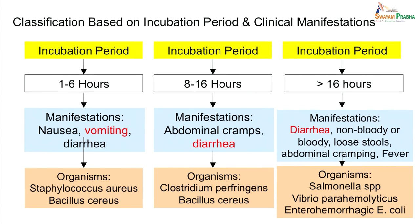The intermediate type has an incubation period of about 8–16 hours with diarrhea as the predominant manifestation, caused by Clostridium perfringens and some strains of Bacillus cereus. In the infective type, the incubation period is more than 16 hours, with diarrhea — which may be bloody or non-bloody — accompanied by fever and abdominal cramping. Organisms causing this type include Salmonella, Vibrio parahemolyticus, and Enterohemorrhagic E. coli.